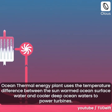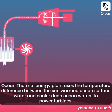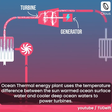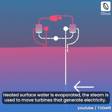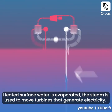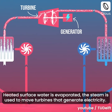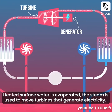An ocean thermal energy plant uses a temperature difference between the sun-warmed ocean surface water and cooler deep ocean waters to power turbines. Heated surface water is evaporated and the steam is used to move turbines that generate electricity.